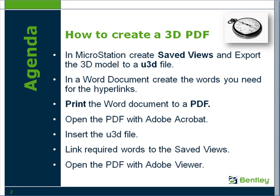These are the overall process steps to achieve what we just saw. In MicroStation we need to create the saved views and export the 3D model to a U3D file. Then in Word for Windows we create the words for the hyperlinks and print that document to a PDF. We then open the PDF with Adobe Acrobat Professional, insert the U3D file, and link the words to the saved views created in MicroStation. Finally, we check everything by opening it with the free Adobe Reader. Let's take those steps one at a time.